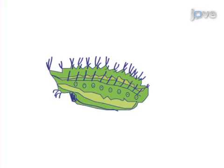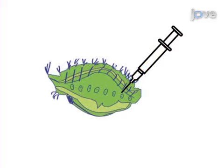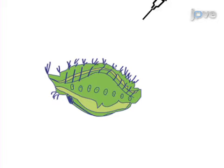This is accomplished by first anesthetizing the caterpillar by placing it on ice, injecting it with a buffer solution containing an anticoagulant, and returning the caterpillar to the ice to allow the hemocytes to re-enter circulation before extraction.